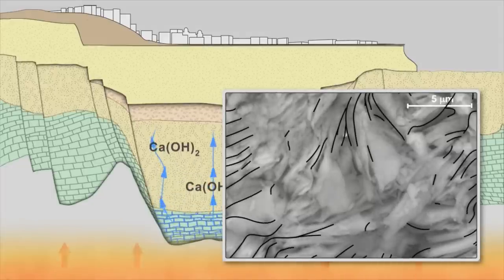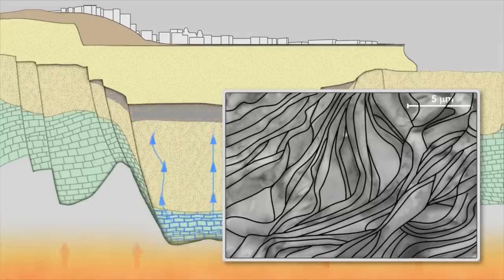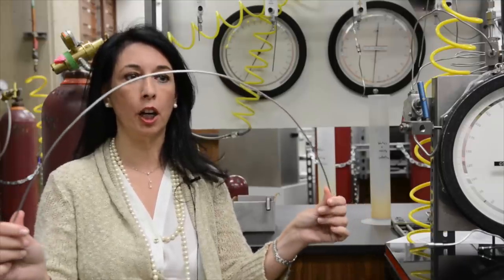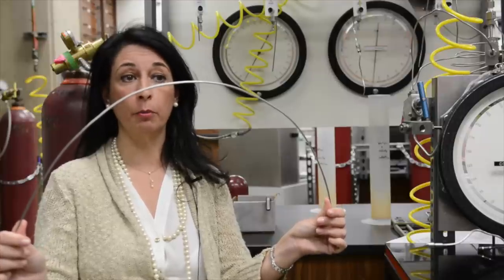Tobermorite and ettringite form a very intricate network of fibers. The cap rock of Campi Flegrei, because of the presence of fibers, is able to withstand much larger deformation without immediately breaking.